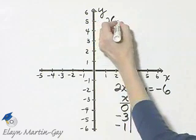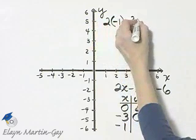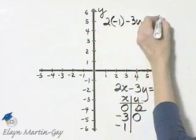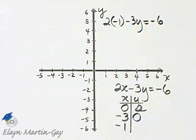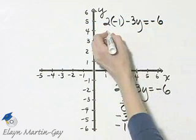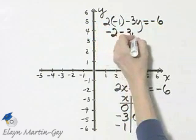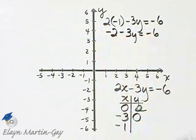If x is -1, I'll have 2 times -1 minus 3y is -6, and I solve this equation for y. So that's -2 minus 3y equals -6.